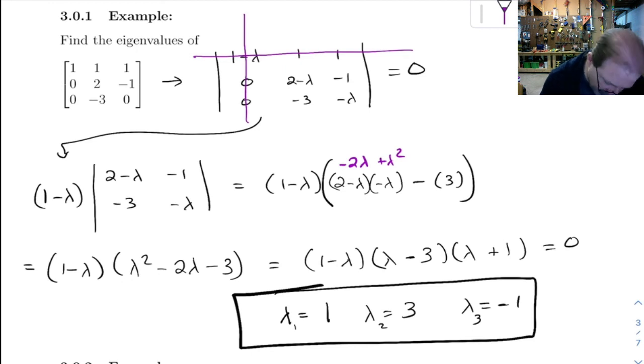So this is generally what you want to do. Subtract lambda off of the diagonal, take the determinant of that, and it's going to give you an equation to solve.